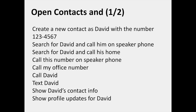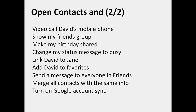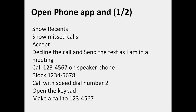In the Contacts category, you can ask Bixby Voice: create a new contact as Sylvain Sorrell with the number 1234567, search for Claude and call him on speakerphone, search for Richida and call his home, call this number on speakerphone, call my office number, call David or text David, show profile updates for David, video call Sylvain's mobile phone, show my friends group, make my birthday shared, change my status message to busy, link David to Angela, send a message to everyone in friends, merge all contacts with the same info, and turn on Google Account Sync.